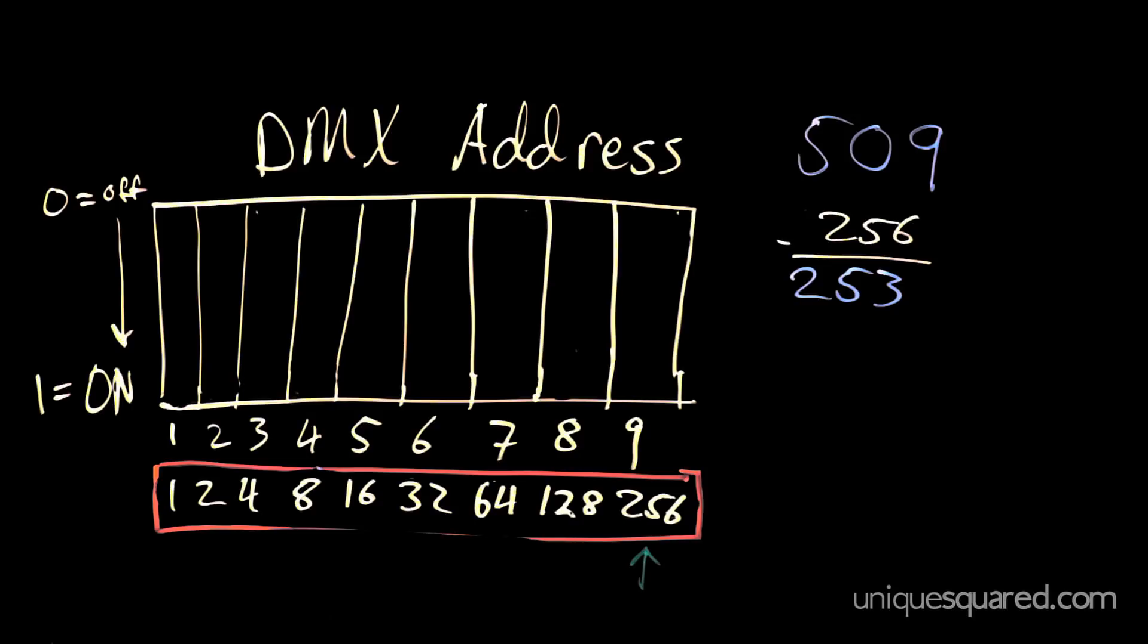What is the next largest number that is equal to or smaller than 253? Yep, 128. Subtract 128 from 253, and you get 125. Again, choose the largest number, smaller than or equal to 125. That number is 64.